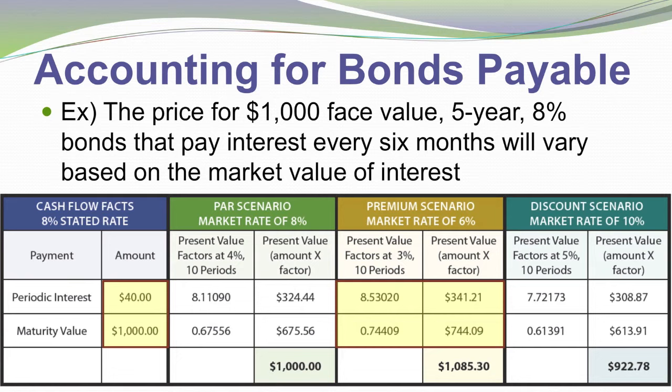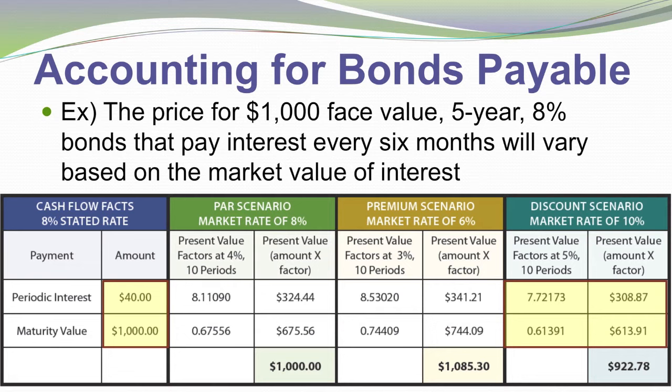In a premium scenario, assuming the market rate is 6%, investors would clamor to get the 8% bonds and pay a premium. In this case they'll pay $1,085 for the bond. That consists of the present value of the $40 stream of payments: the present value factor for 10 periods at 3% (half of the 6% market rate) is 8.53, times $40 gives a present value of interest of $341, and the present value of the principal is $744, confirming investors would pay $1,085.